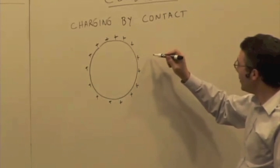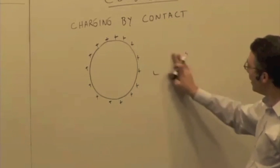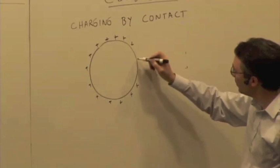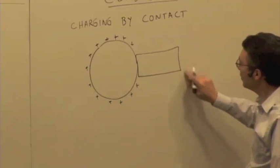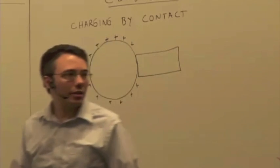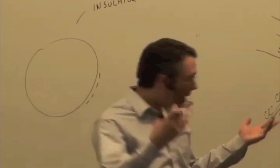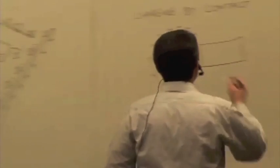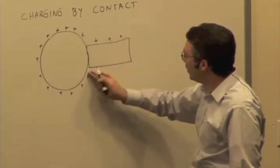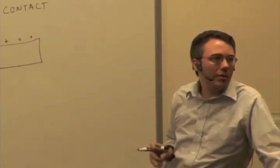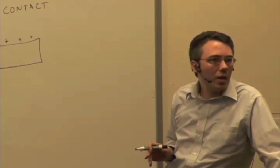And I bring another piece of metal nearby, which is originally neutral, and I bring them in contact so they actually touch. So what happens to the charge? Yeah, it actually gets distributed over the entire object, right? Because why? Why in this case is the charge going to distribute over the entire object?